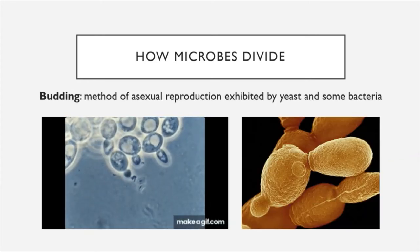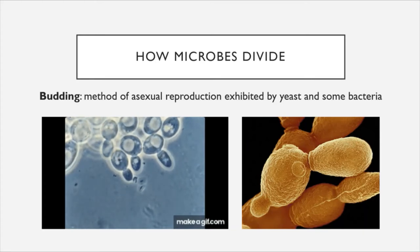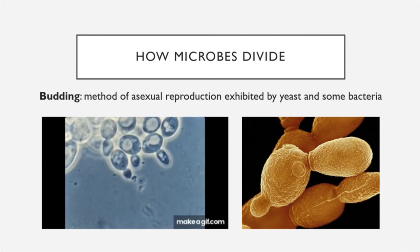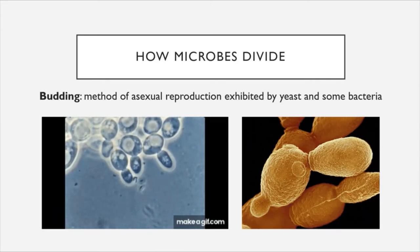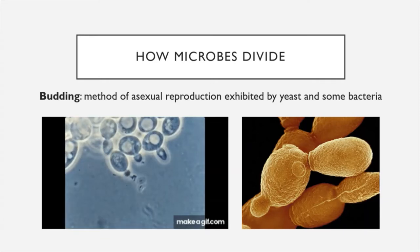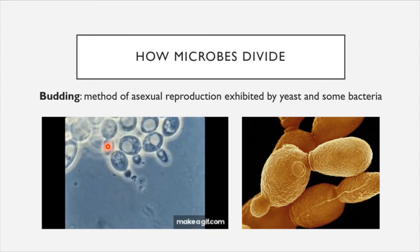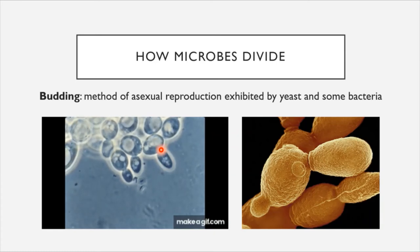Another form of microbial division is a phenomenon called budding. Budding is also a type of asexual reproduction, but this type takes place mainly not in bacteria but rather by yeast — the eukaryotic single-celled fungi. There are some bacteria that perform budding, but yeast are the main organisms that perform this type of reproduction. Yeast cells form buds that emerge from their surface, and eventually those buds break off and become new independent cells.